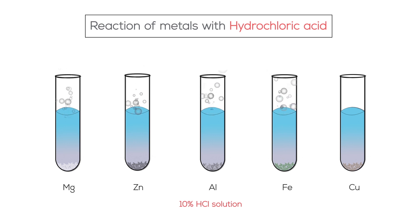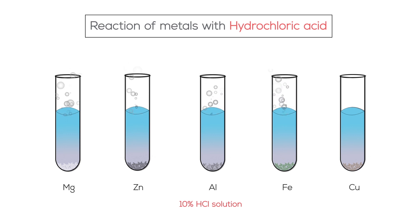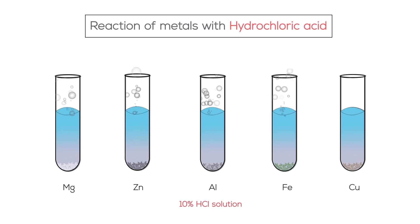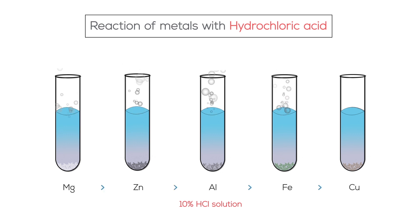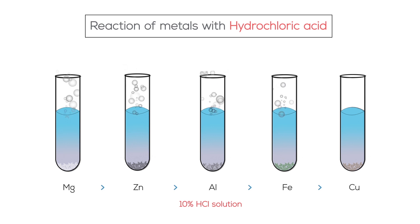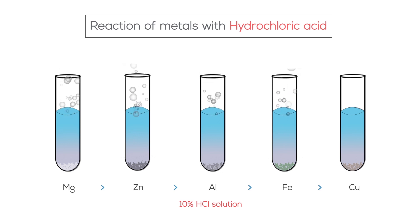The rate of formation of bubbles is the fastest in the case of magnesium. The reaction is also the most exothermic in this case. On the basis of the bubbles produced and the heat generated, we can place the metals as per their reactivity. In the case of copper, no bubbles were seen and the temperature also remained unchanged, showing that copper does not react with dilute hydrochloric acid.